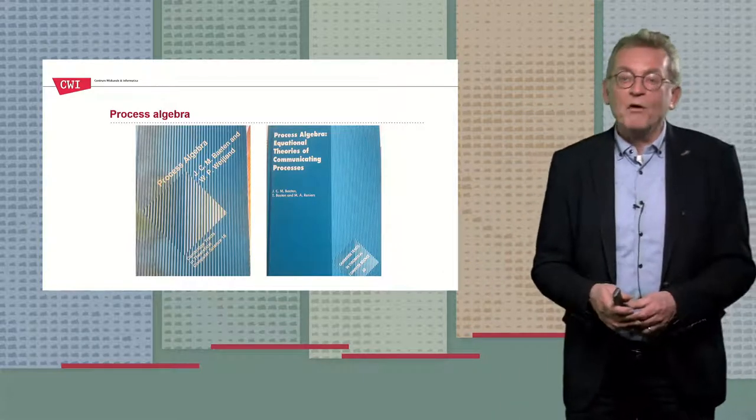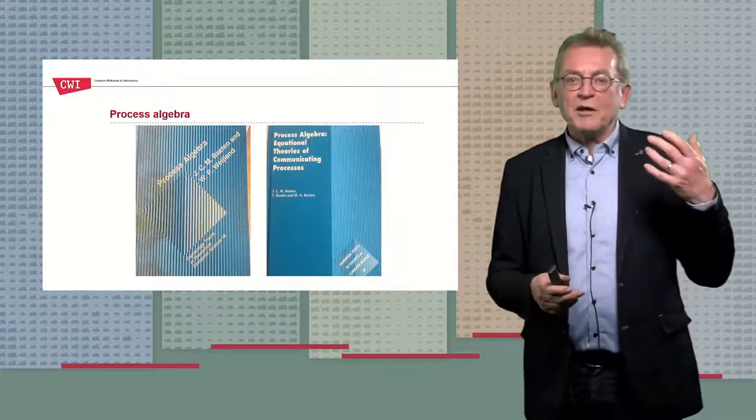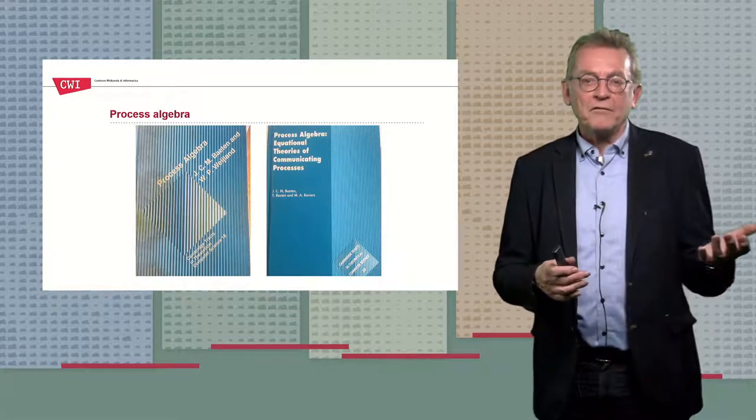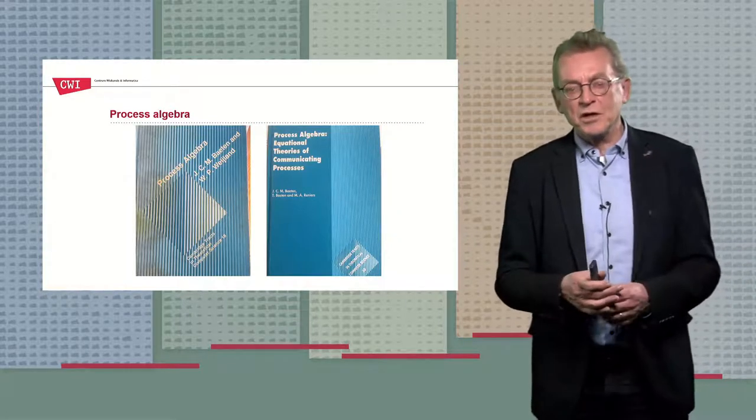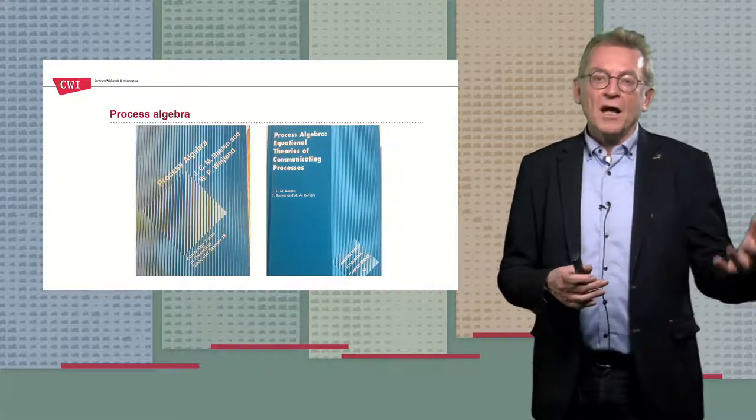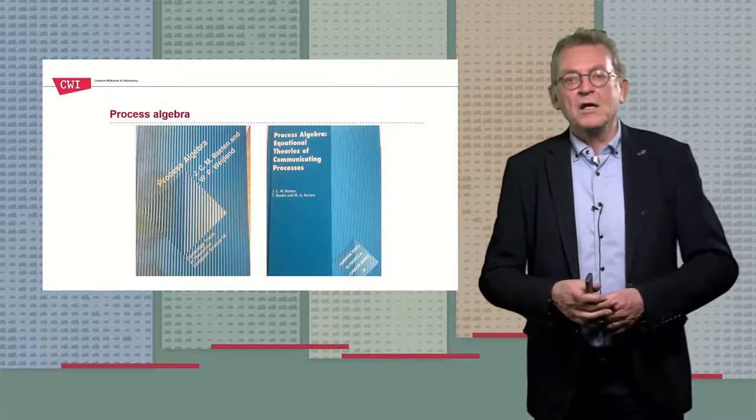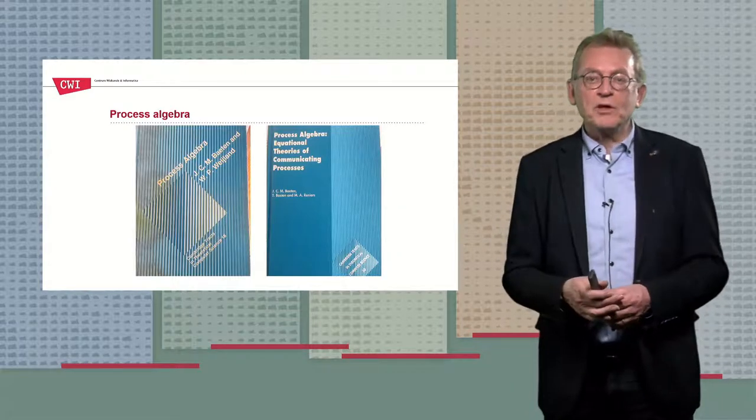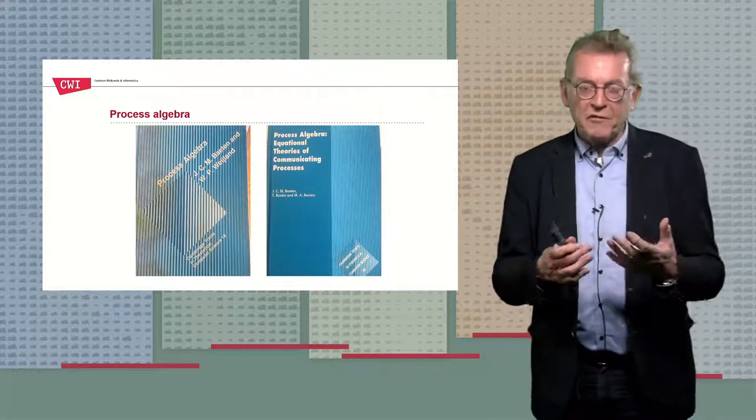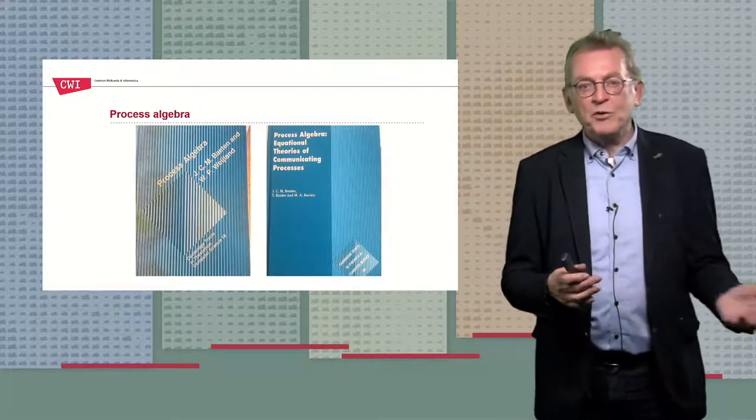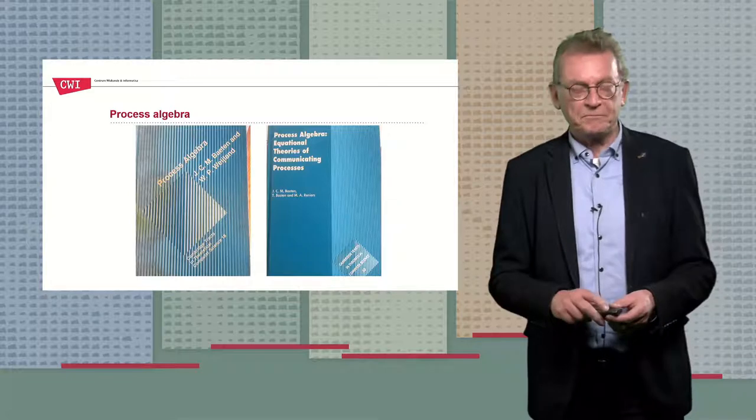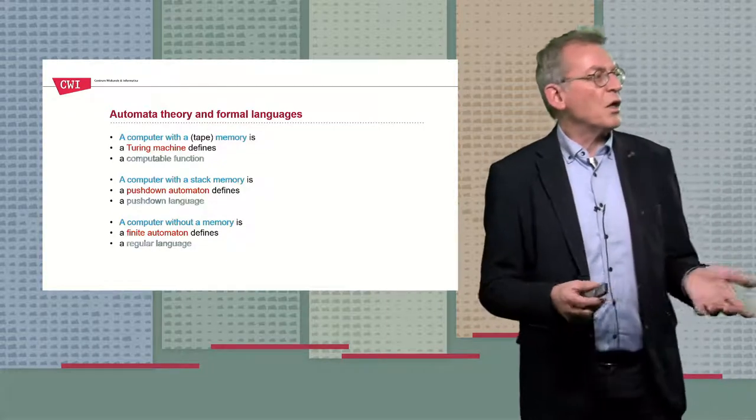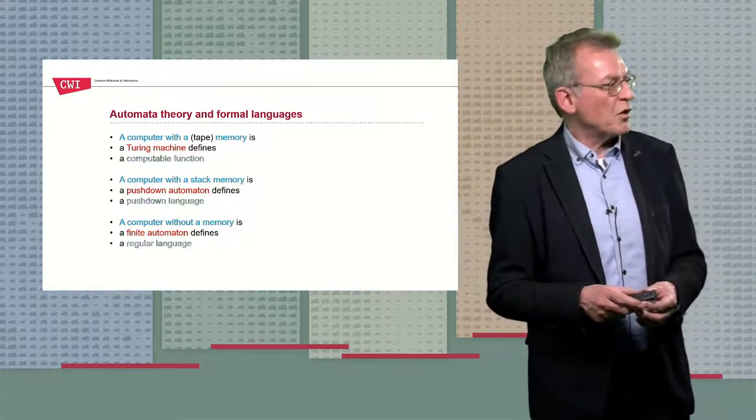That finishes more or less what process algebra is about. So you may wonder, what did I do next? What I did next was to get back to the original question: the integration of automata theory, as we teach it to first year computer science students, and the process theory that is shown in this book. It's the adding of interaction to Turing machines, and therefore turning these old-fashioned computers into modern computers.